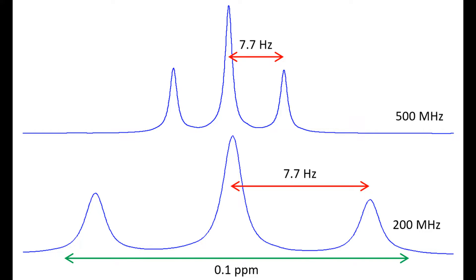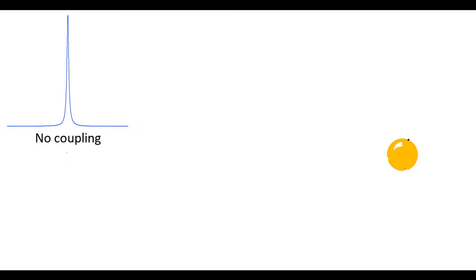The coupling constant is usually measured in Hertz. The same coupling constant, even though it is the same number of Hertz, looks larger at lower magnetic fields on the chemical shift scale measured in ppm. This is because a lower magnetic field strength results in a lower resonant frequency. Therefore, on the chemical shift scale, in this instance, the 200 MHz multiplet looks wider than the 500 MHz multiplet.